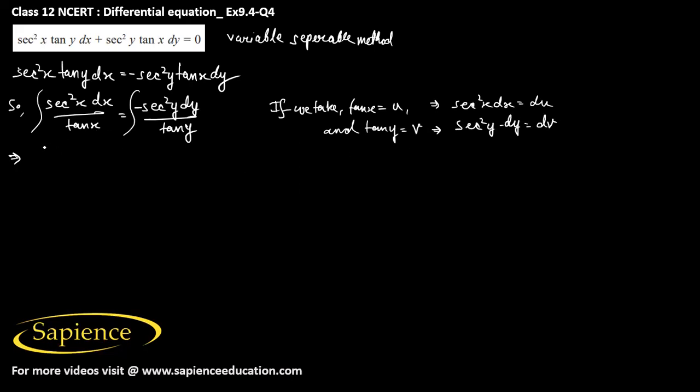So it means this is coming like this, that is your du by u equals to minus of integral dv by v. So in this form, we have the differential equation. So this will be now integral 1 by u that is your log u and that is equal to minus of log v plus some constant c.